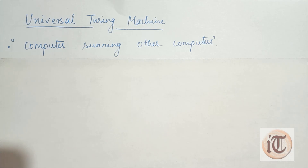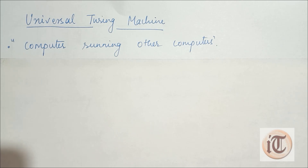In general terms, a Universal Turing Machine is just like a general purpose digital computer. A digital computer accepts programs written in a high level language, and according to that program, if we put some input it gives some output.